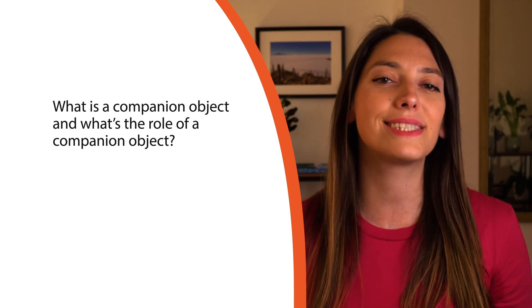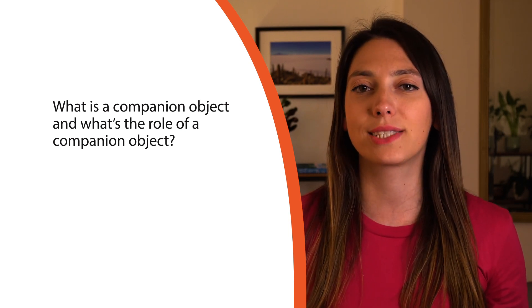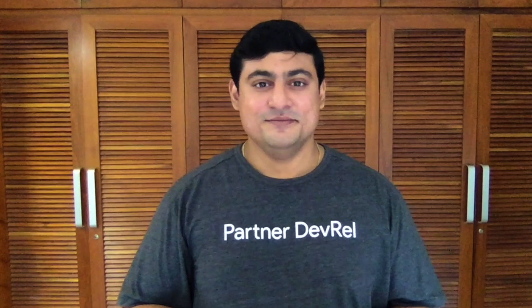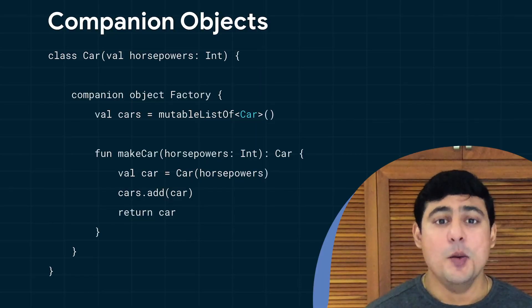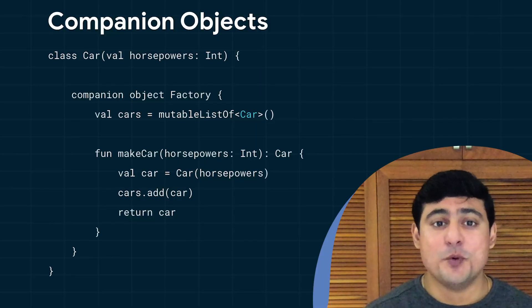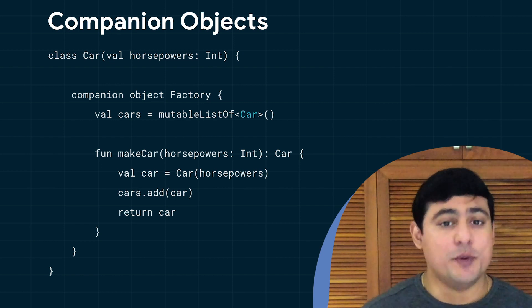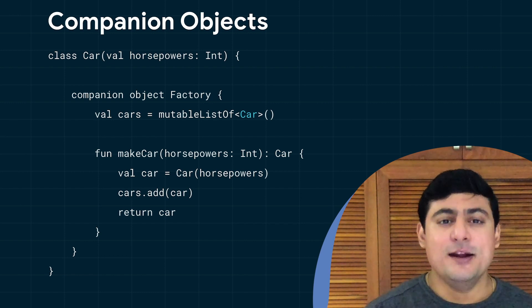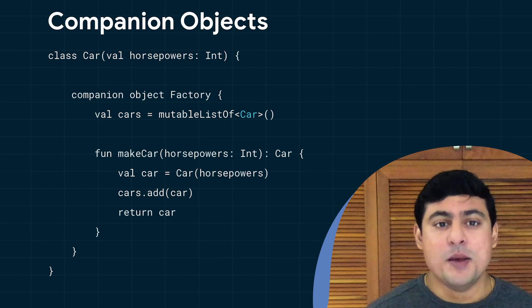You can have static-like functionality with companion objects. The companion object is like a singleton — variables and functions declared there are similar to static variables and functions when compared to Java. They can be accessed via the name of the containing class and are initialized when the class is first loaded. Be aware that the companion object is a proper object on its own and can have its own supertypes, and you can assign it to a variable and pass it around. If you're integrating with Java code and need a true static member, you can annotate a member inside a companion object with the @JvmStatic annotation.